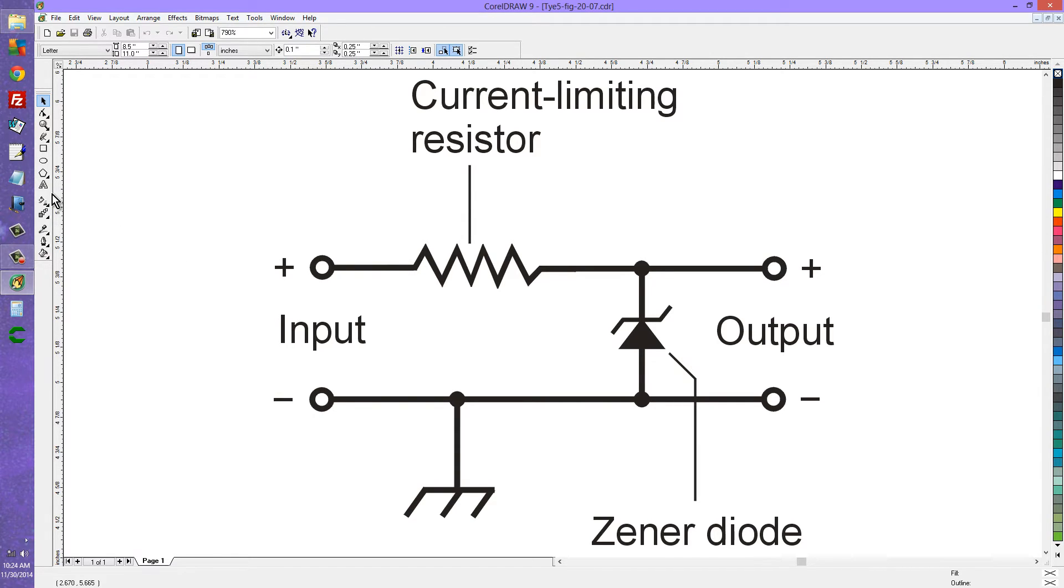Now let's just say you have 6 volts at the input, and you want to regulate that down to 3.6 volts. Then you put a 3.6 volt Zener diode right there.